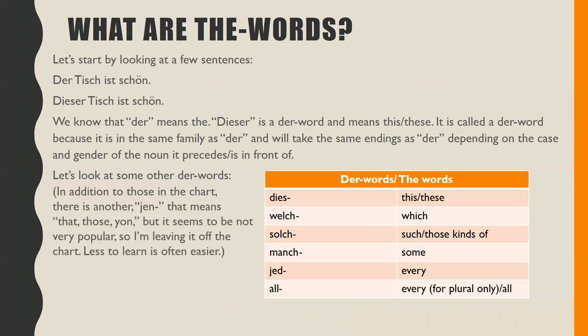In addition to those in the chart, there is another: 'jene,' which means 'that,' 'those,' or 'yon' — but it doesn't seem very popular, so I'm leaving it off the chart. Less to learn is often easier. Many books leave that word off altogether. If you prefer to learn it, go ahead and add it to the chart.